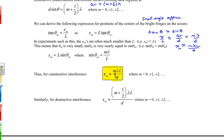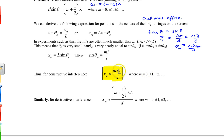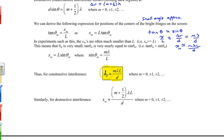For destructive interference using the small angle approximation, just replace m with (m + 1/2) in the formula. The distance x represents the position of bright fringes on the screen, and also the spacing between fringes. To change the fringe spacing: increasing the wavelength increases the spacing; increasing the screen-to-slit distance L increases the spacing; and decreasing the distance between the two slits D also increases the spacing.